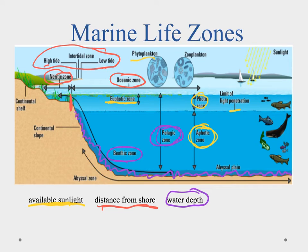If you're walking at the beach, you'd first reach the high tide mark, which is part of the intertidal zone. Below the low tide mark you enter the neritic zone, because there's always water there. If you continued walking and reached the edge of the continental shelf, you'd find yourself in the oceanic zone. So we have three different ways to classify where marine life exists.